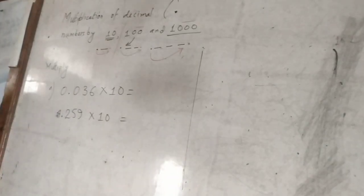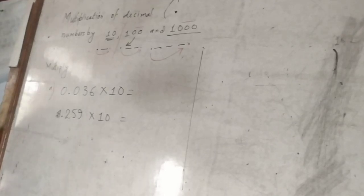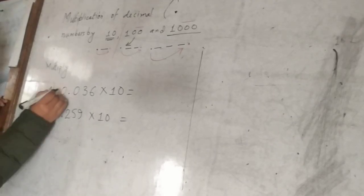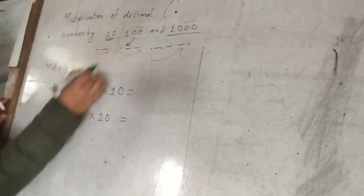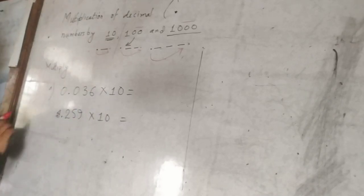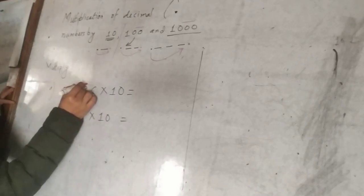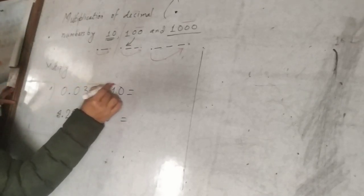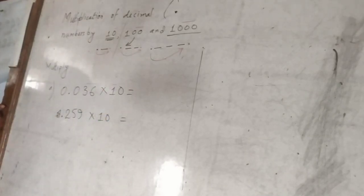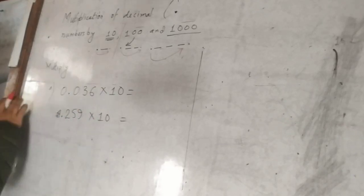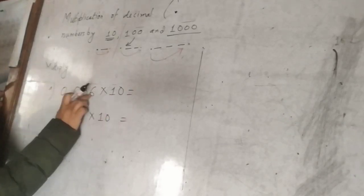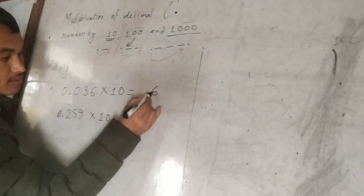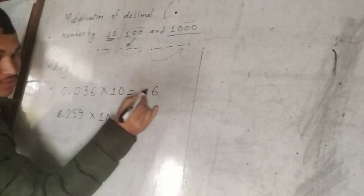Now, how do you multiply? Your number — you multiply: 1, 1, 3, 6, 7, 8, 9, 10, 13, 16.